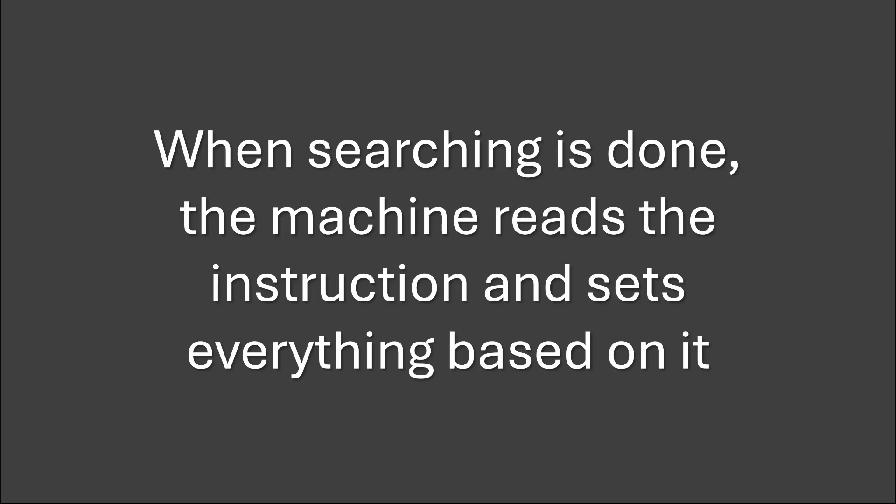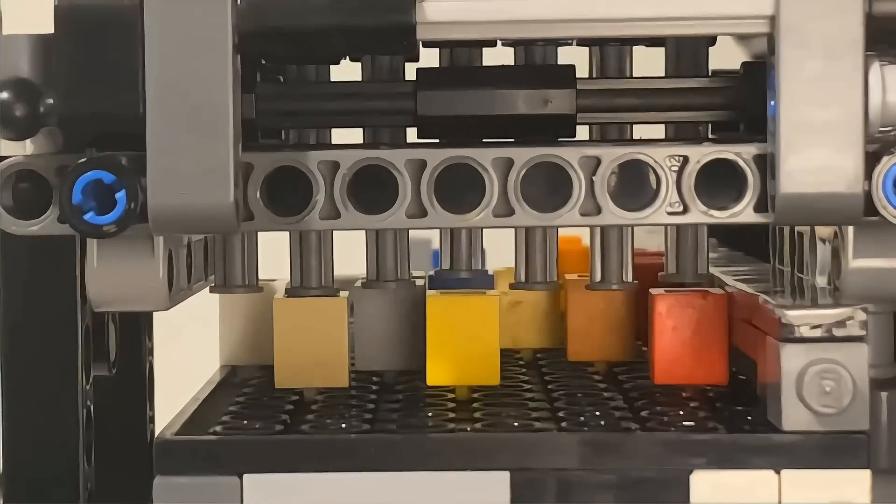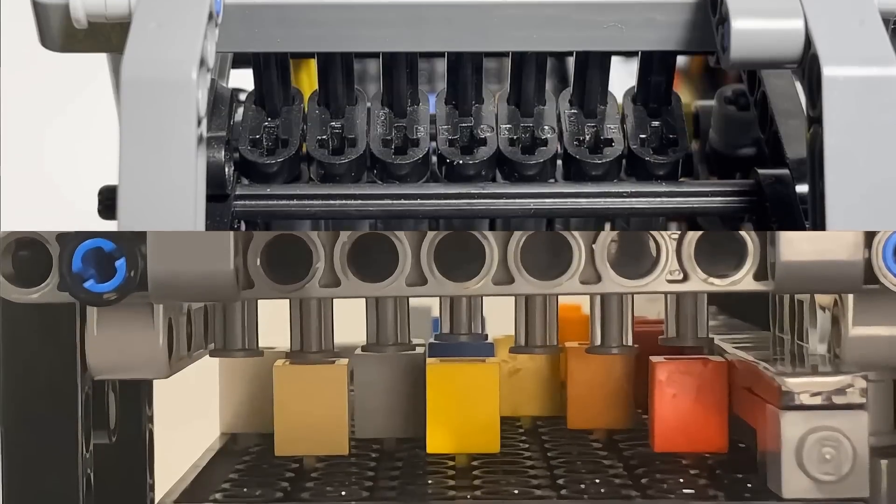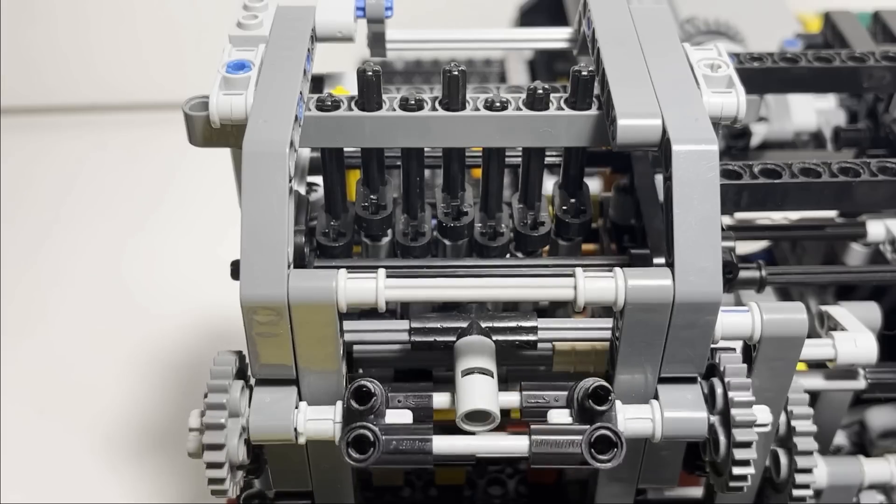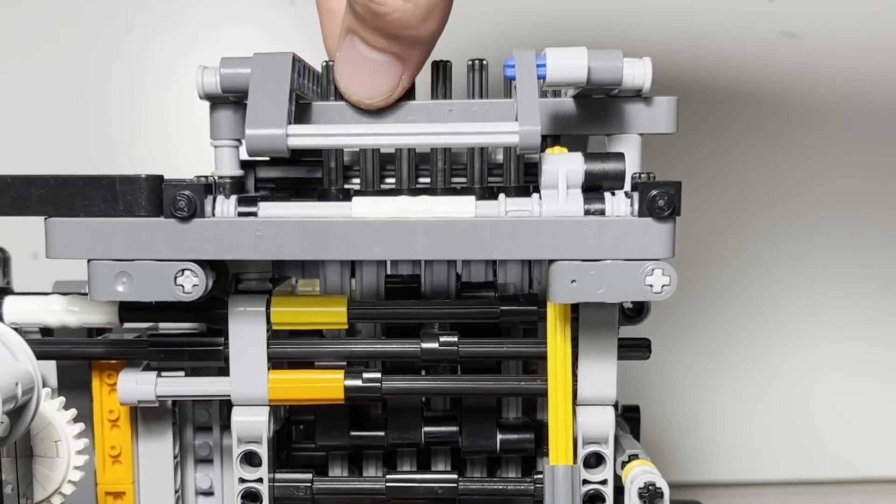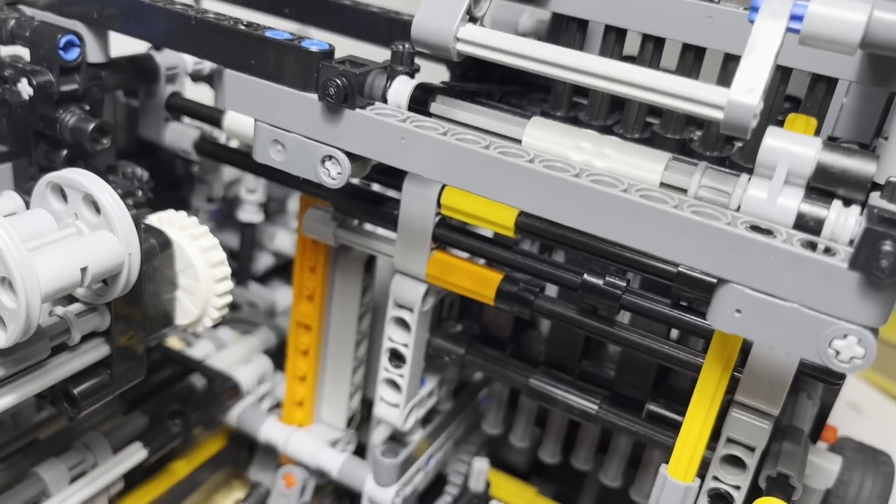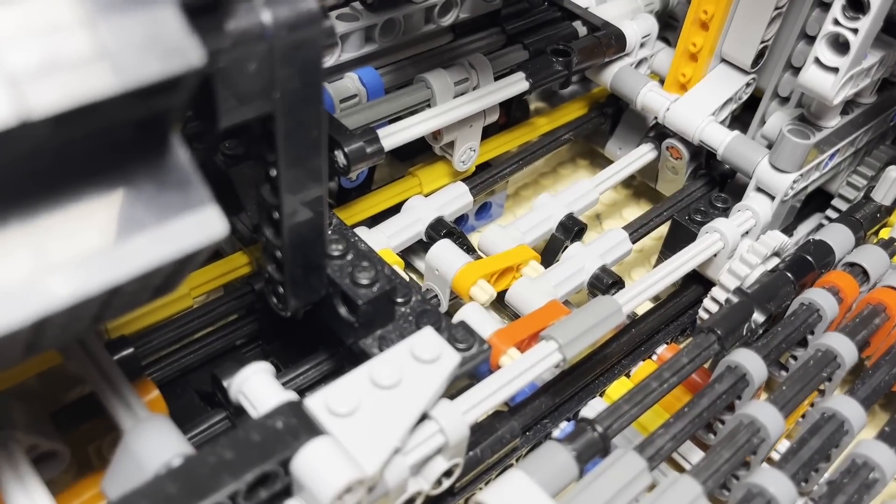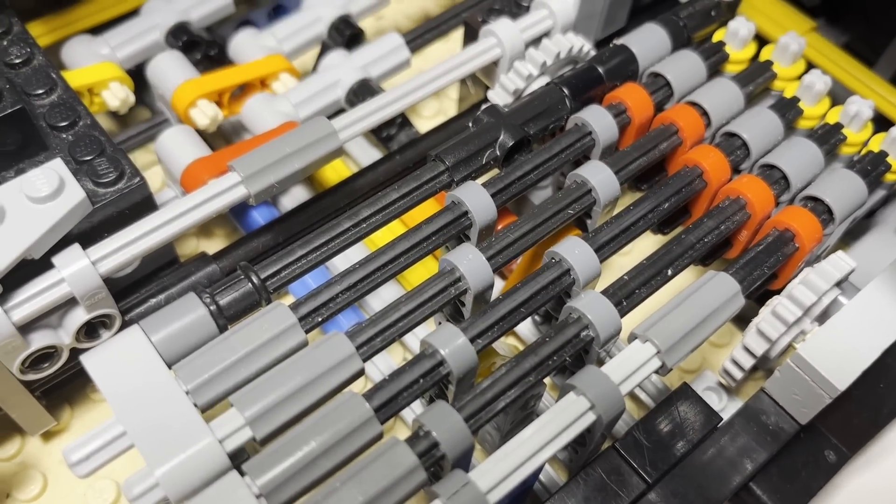When searching is done, the machine reads the instruction and sets everything based on it. Here you can see the rhythm bits. Each of them has a handle, so that it can be handled. Each one is also connected to an axle. Three of the axles are connected to the remaining registers. And they are also connected to the display.